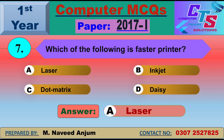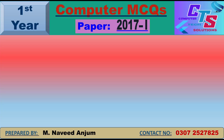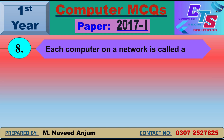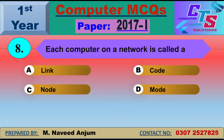Question number 8: Each computer on a network is called what? This is a repeated question. Each computer on a network is called a node. If a network has 100 computers, each is node 1, node 2, node 3, etc. Option C — node — will be the right answer.